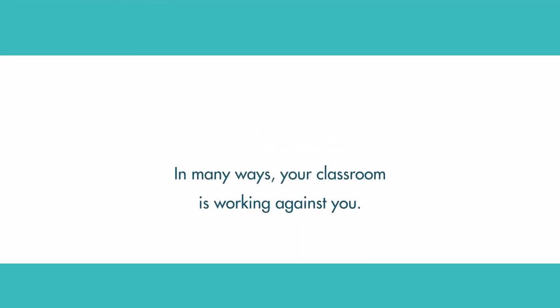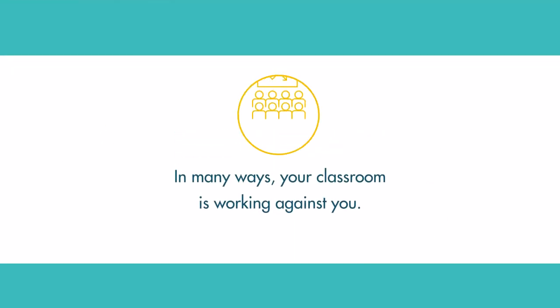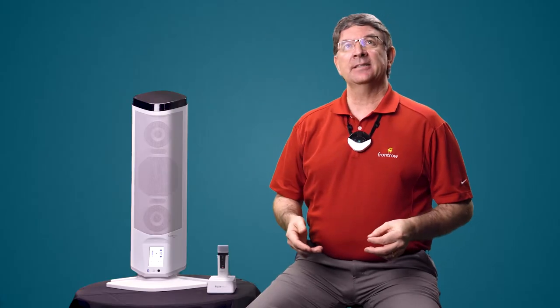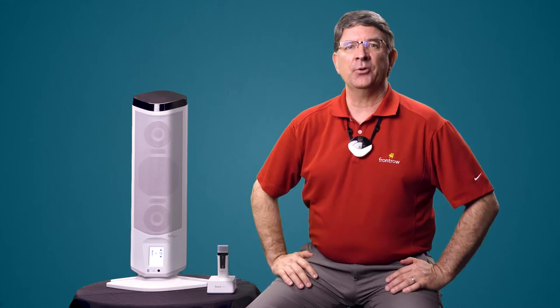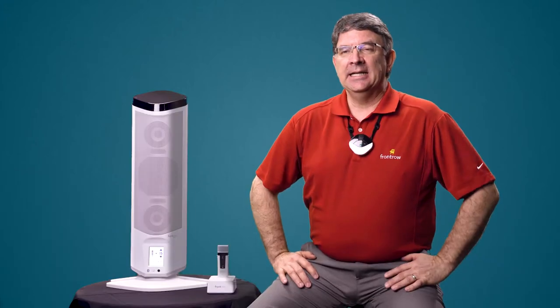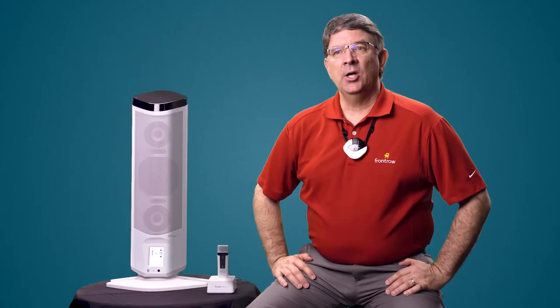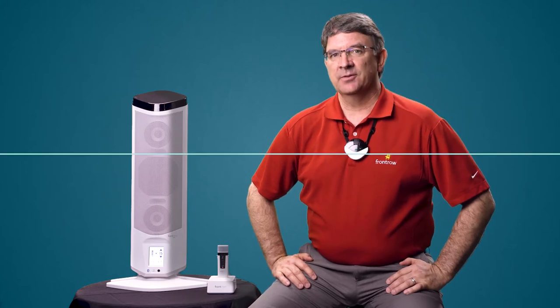In many ways, the classroom is working against us. One exception is the lighting. If you look up at the ceiling, there's probably fluorescent lights from front to back - we're spreading light all throughout the room. Light works with student devices, your Promethean board, smart board. We have light nailed down. But sound, audio - not so much. It's also in waves, but the classroom presents some problems for us.